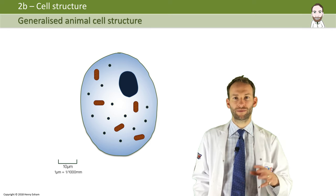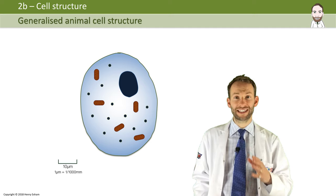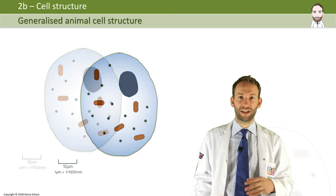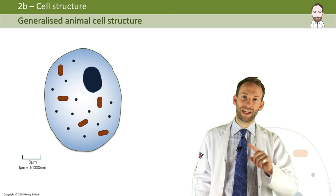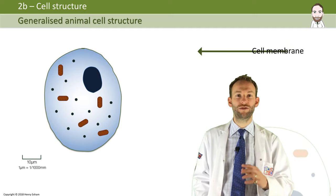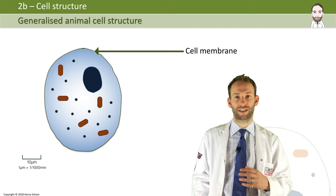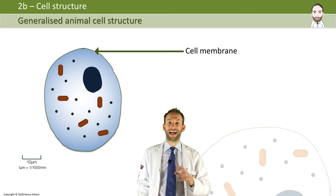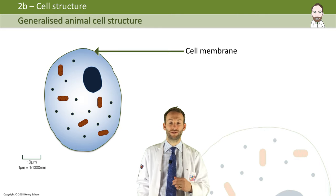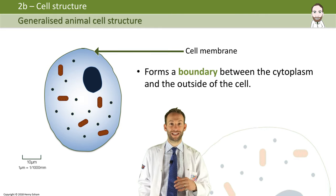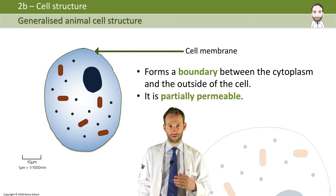Animal cells have a cell membrane. The cell membrane is the boundary between the inside and the outside of the cell, and it controls what comes in and out of the cell. We say it is partially permeable.